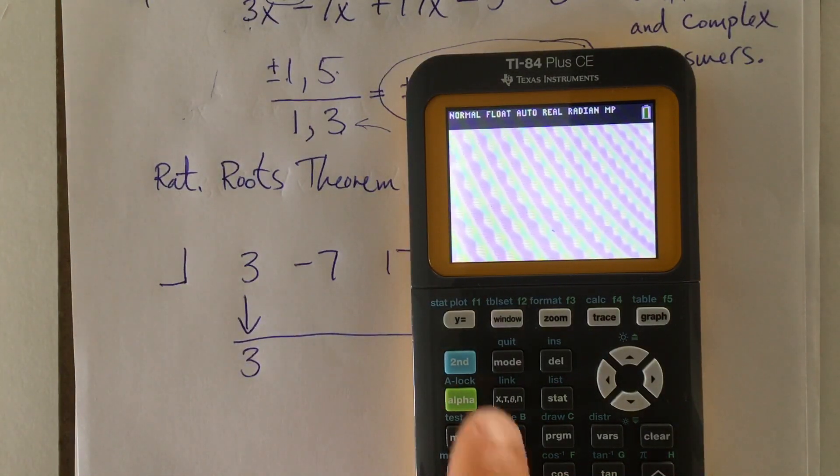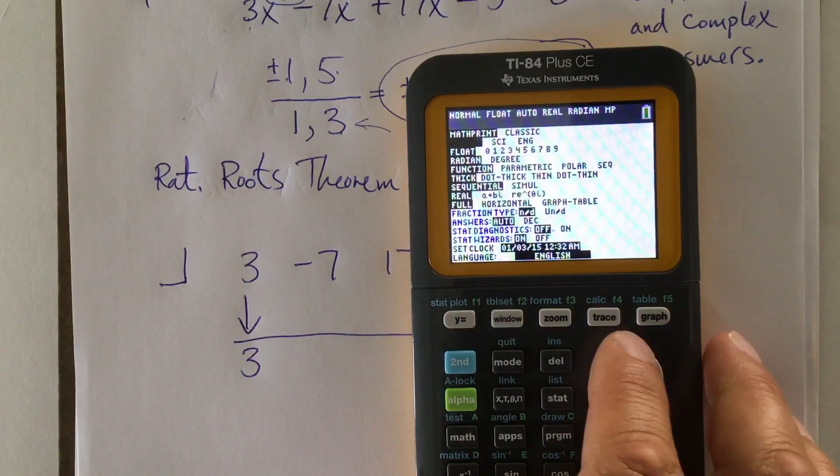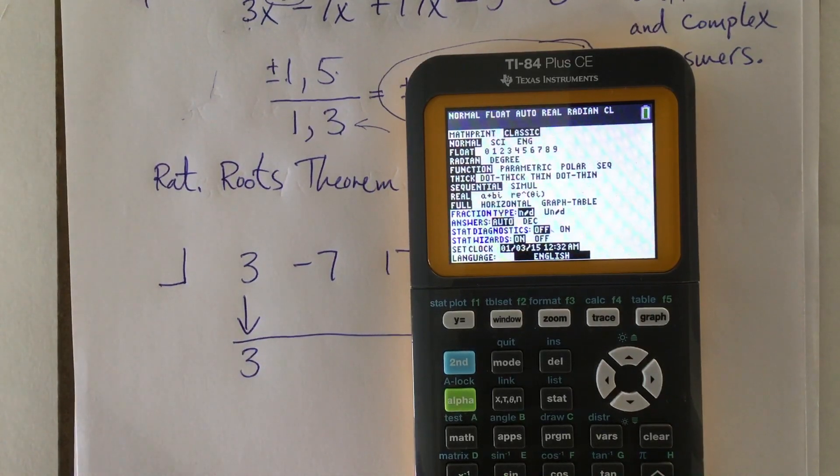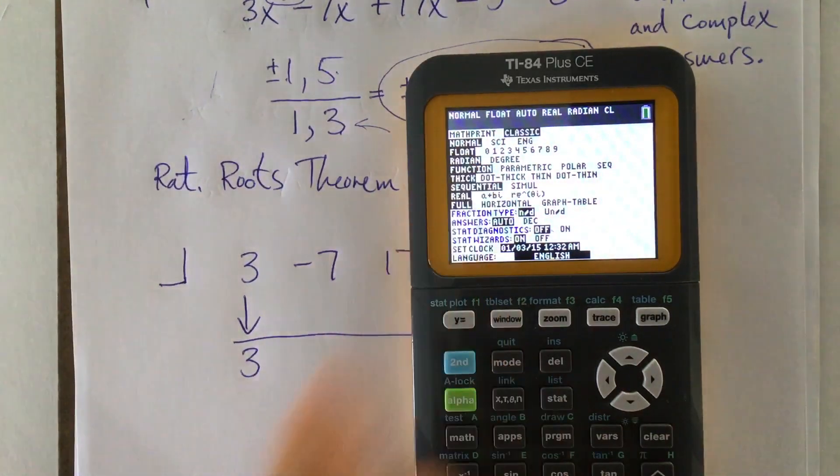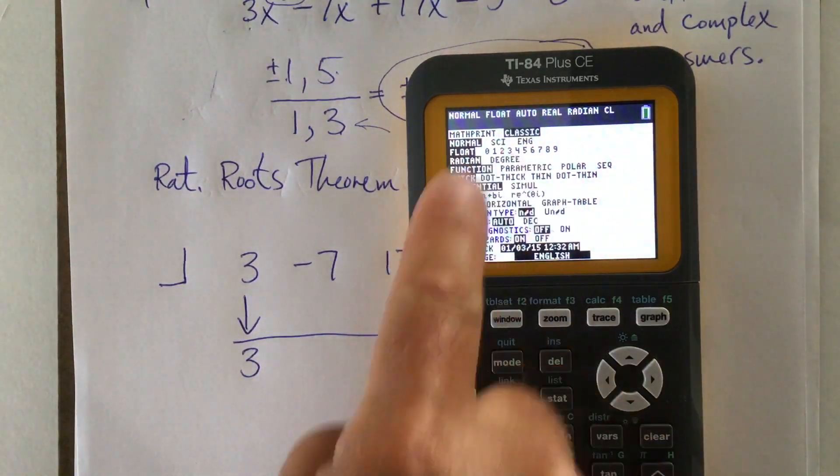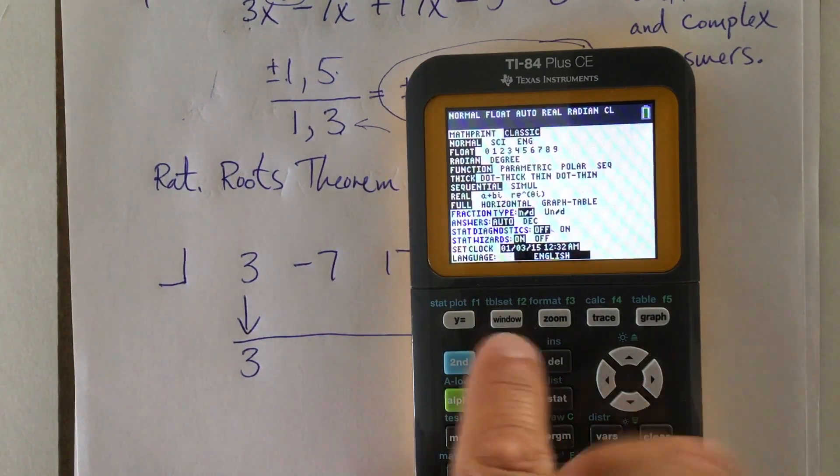And when I turn it on, I'm going to go to mode. And just so you know, I'm going to go back to classic mode this time. In case anybody out there does not have math print as a capability, you can switch between the two. In fact, you know what? You figure out what you like the best and then use that. That's okay by me.